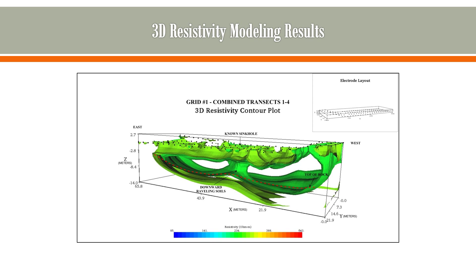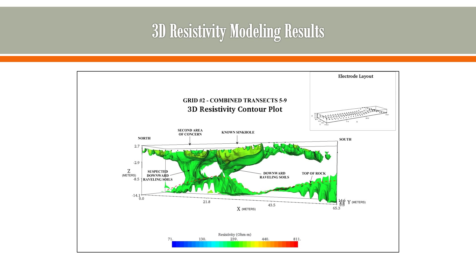In the north-south direction, we have this zone of potentially raveling, downward raveling, collapsing soils. And as mentioned, we had a second location displaying the exact same conditions developing, which we labeled as a second area of concern.